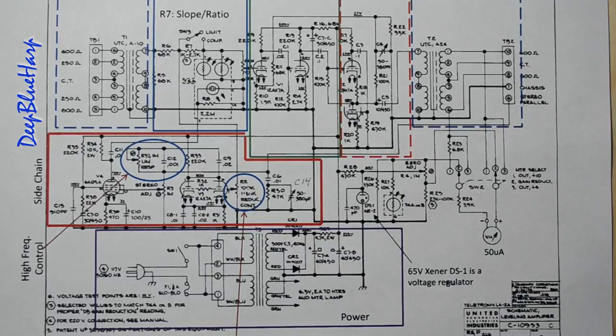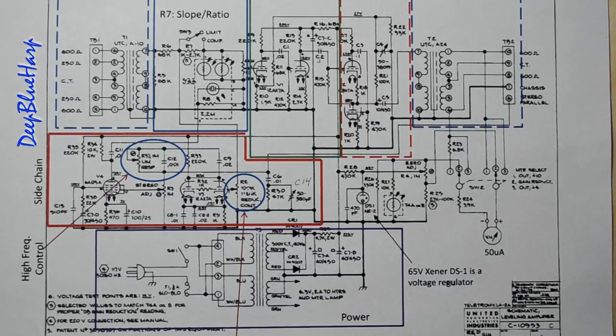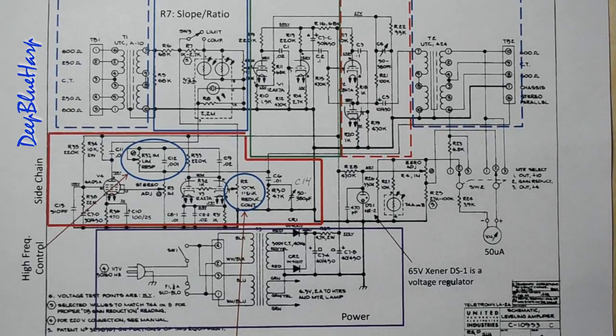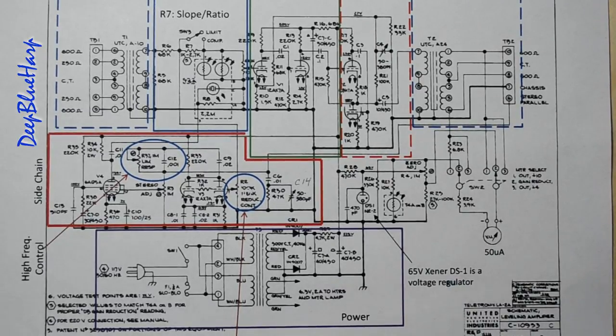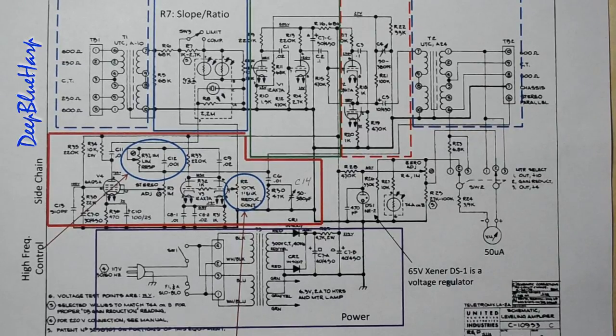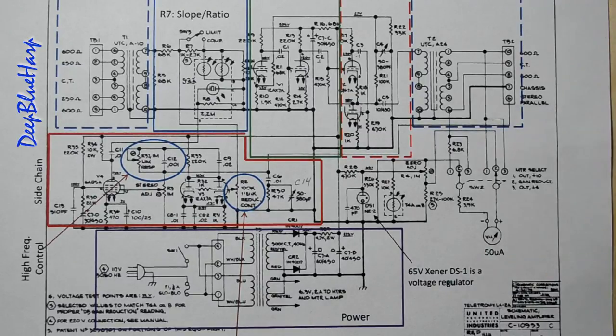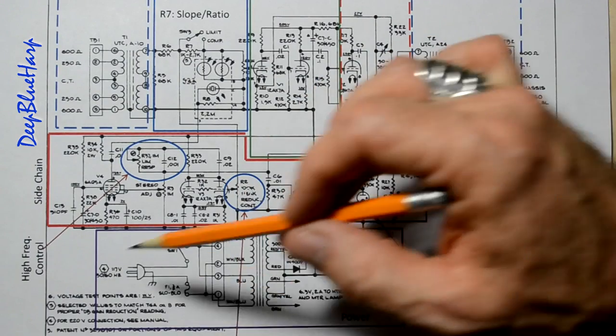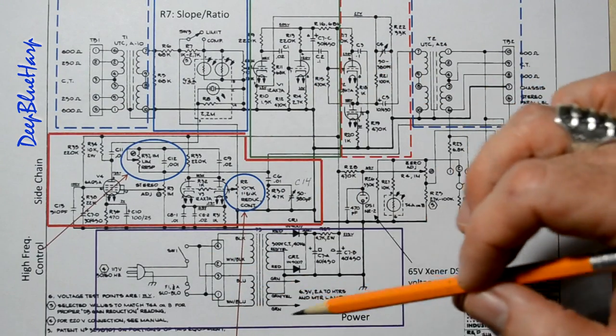I've taken the original schematic which you can find anywhere on the web and I've outlined the building blocks to the original circuit. Now there are some variances between the very first LA-2 compressor and the subsequent LA-2 and LA-3. Here's the basic components. We've already discussed the power supply in a previous video.